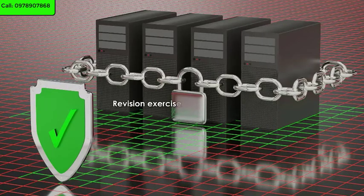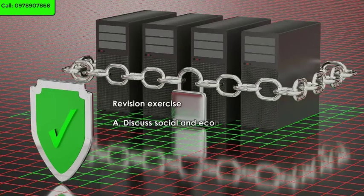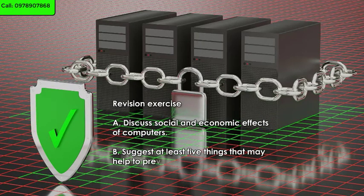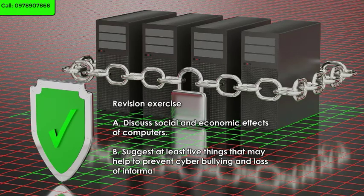Revision exercise. A: Discuss the social and economic effects of computers. B: Suggest at least five things that may help to prevent cyberbullying and loss of information through hacking.